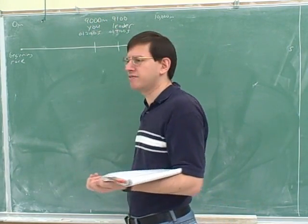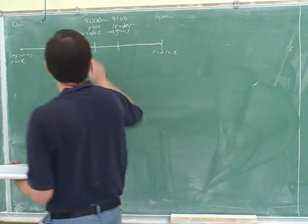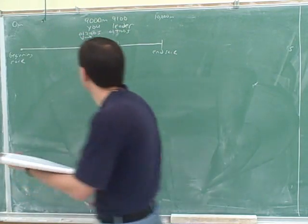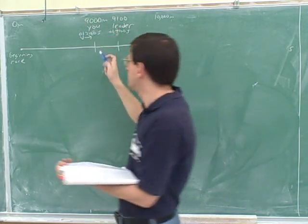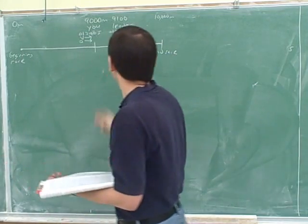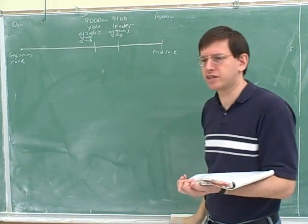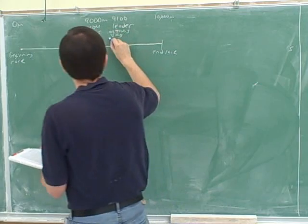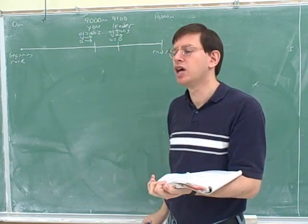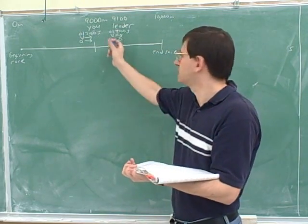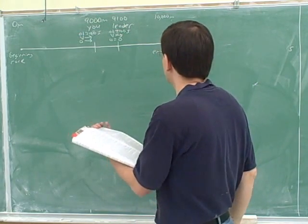What direction are our velocity vectors in? Positive — both are to the right. What direction is your acceleration vector going to be in? Positive — you're going to have to speed up to catch up. What about the leader's acceleration? Zero, because they told us the leader has constant speed. Constant speed means zero acceleration — that's one of the most important things we reviewed. So it's good that was clear to you.